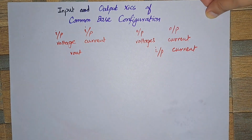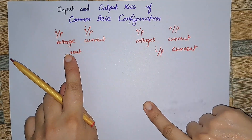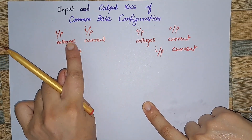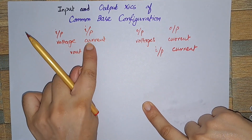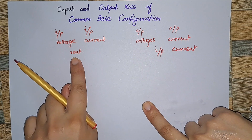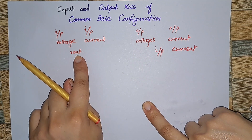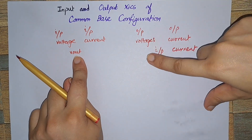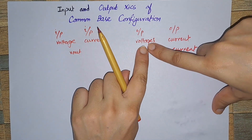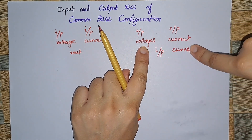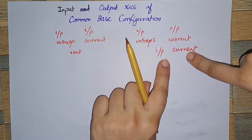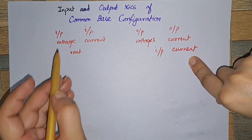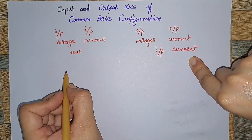So you can clearly see the relation between them: when you are going to plot the input characteristics, you will be plotting the input voltages and input current for the different values of the output voltages, while when you are going to plot the output characteristic curves, that will be a graph between the output voltages and output current for the different values of the input current.